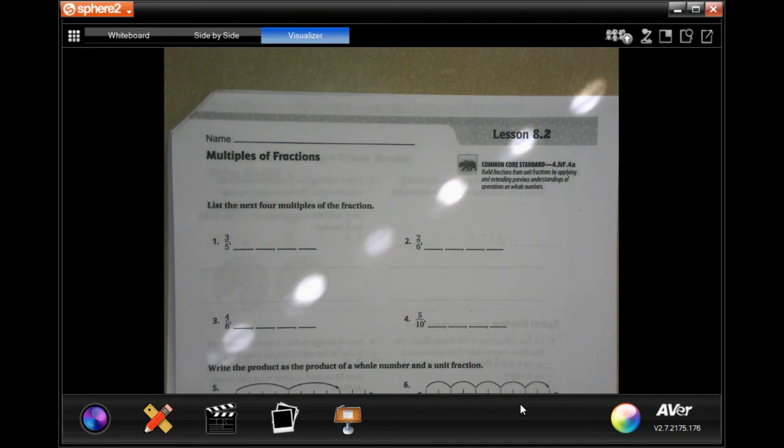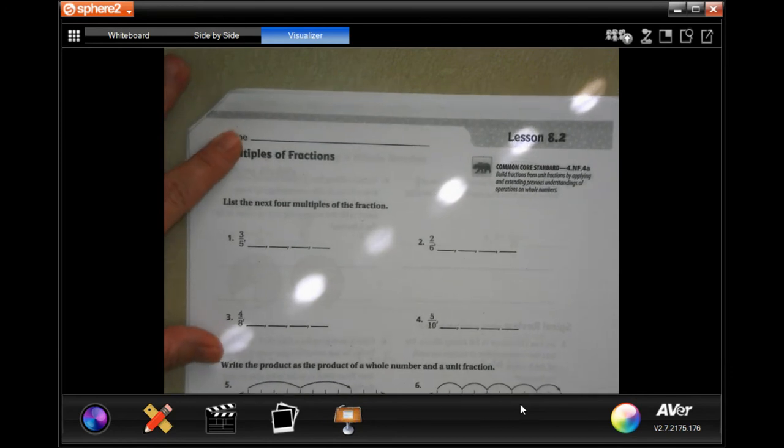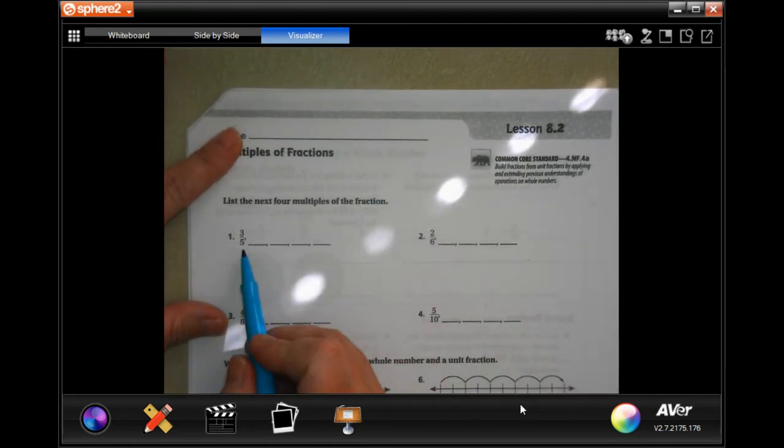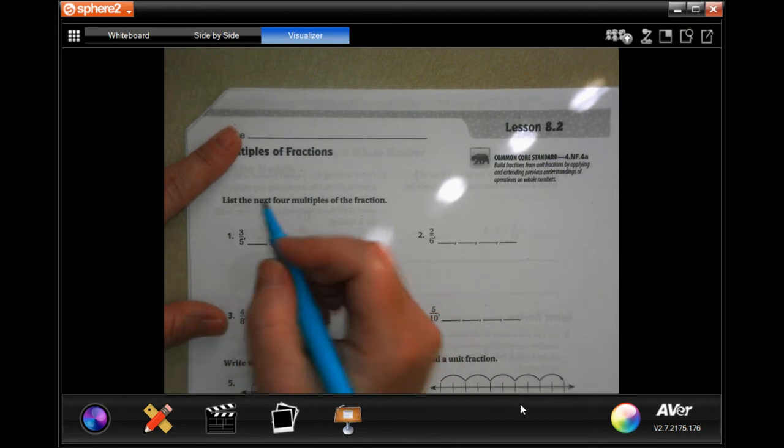Hey guys, welcome to fourth grade chapter 8 lesson 2. Let's go ahead and get started. This wants us to list the next four multiples of a fraction. Okay, well you're going to keep the denominator the entire way across.